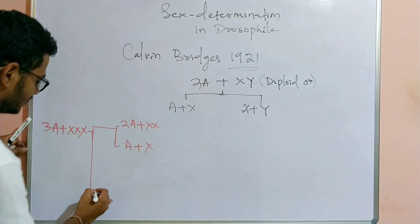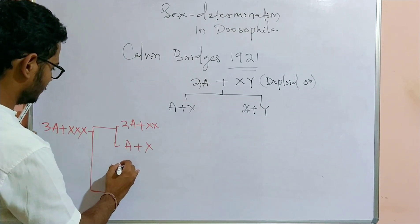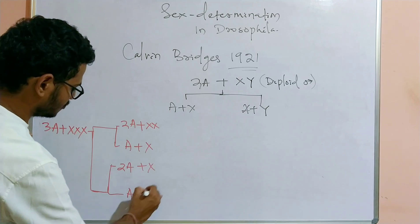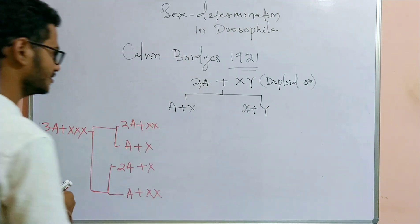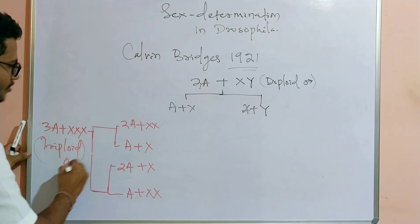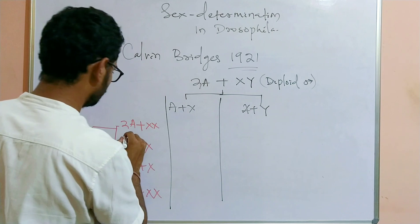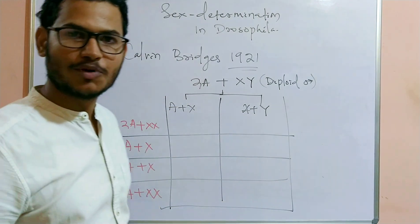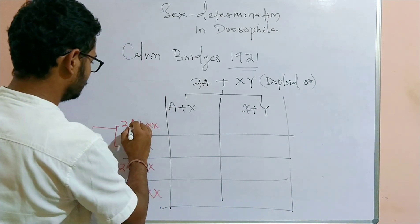Another possibility from the triploid female is one autosome plus one X chromosome. So there are two further possibilities: one having two autosomes and a single X chromosome, and another having a single autosome with two X chromosomes. These are the different gametes possible from the triploid female, which was crossed with the diploid male to give various combinations.